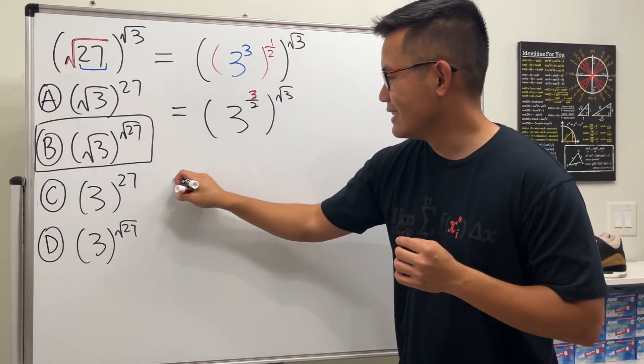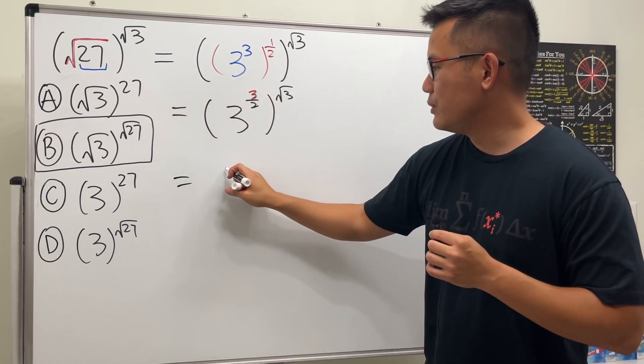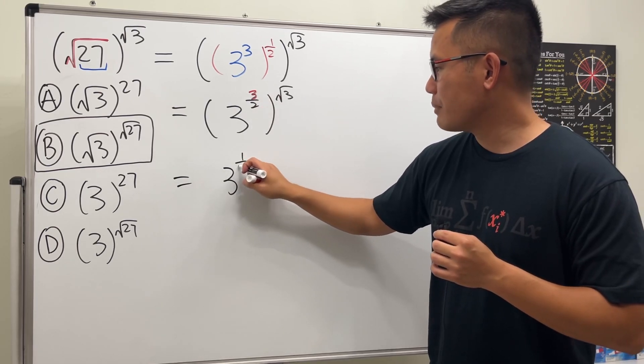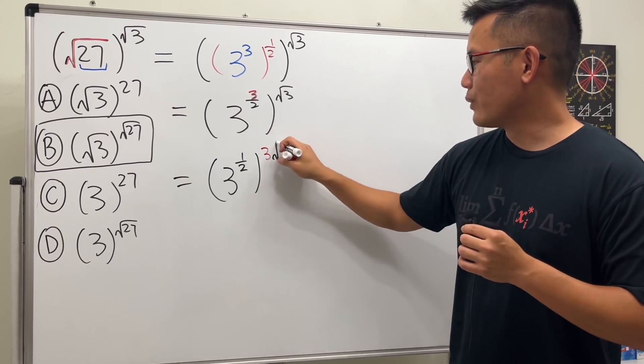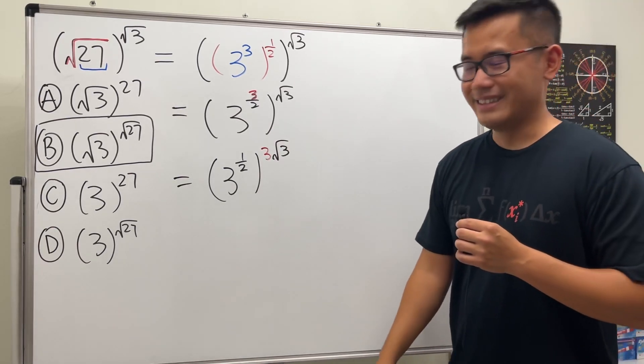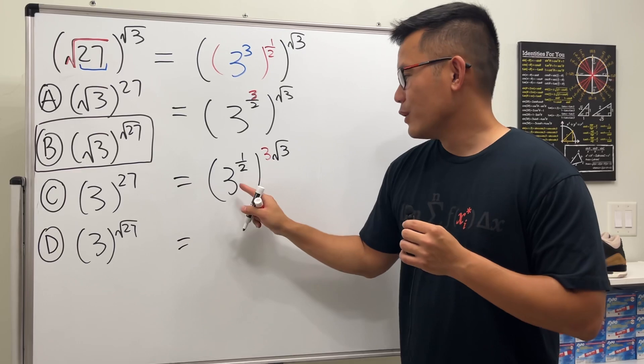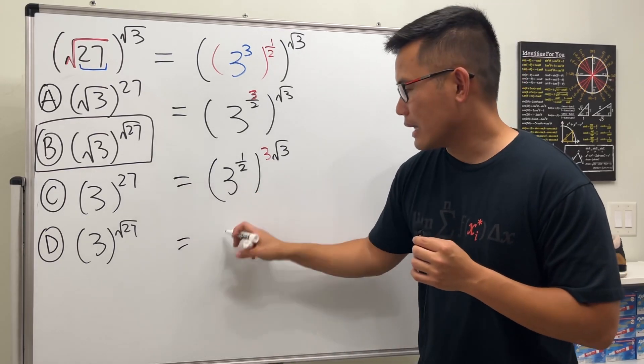For the inside, so let's look at this as 3 raised to the one half power, and then this 3 to the square root of 3 power right here. Okay, what's 3 to the one half power? That's just the square root of 3 as we mentioned earlier.